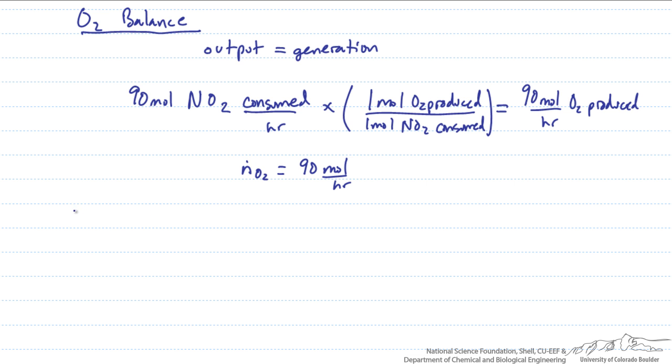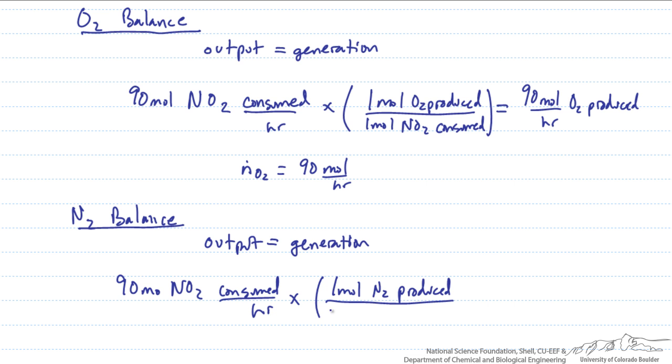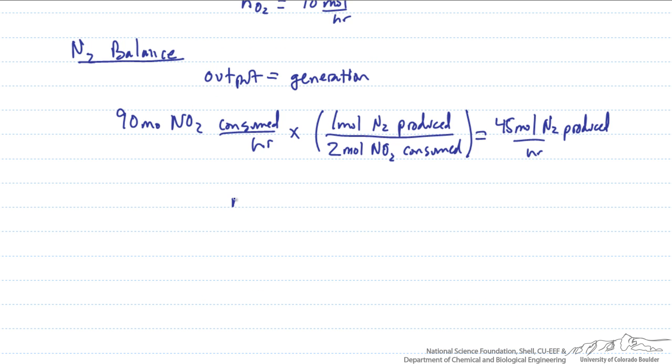So the final species to balance is the N2. In this case the only place we have N2 is in our generation term, so we can see again that output equals generation. We again have our 90 moles of NO2 consumed per hour, but in this case for every one mole of N2 produced we have two moles of NO2 consumed. This leaves us with the production of 45 moles of N2 produced per hour, and this would then leave us with our other unknown flow rate of N dot N2 equals 45 moles per hour.